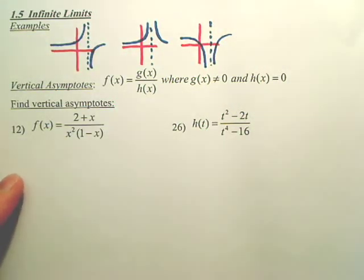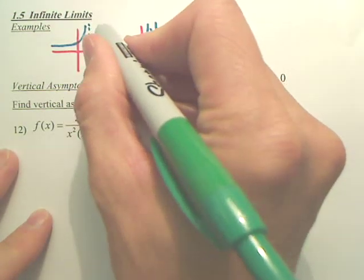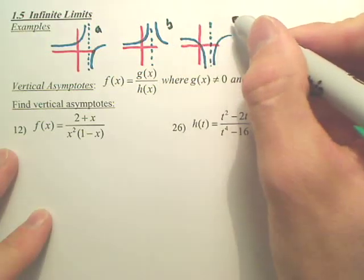If we're taking the limit as X approaches C, let's call this A, B, and C.